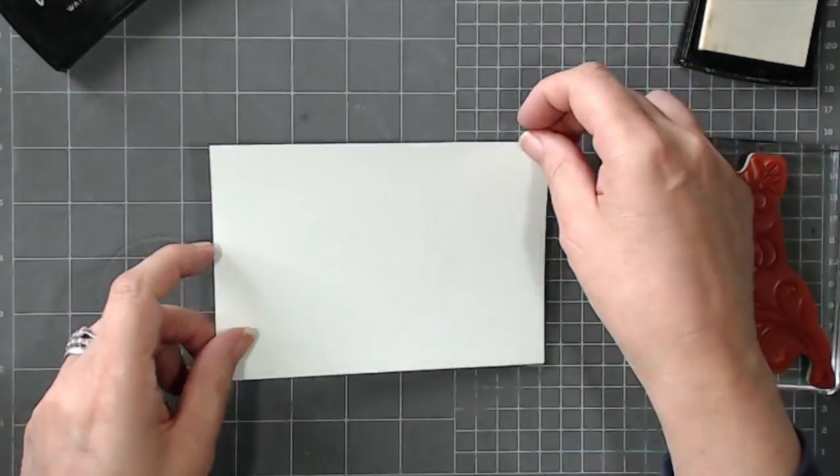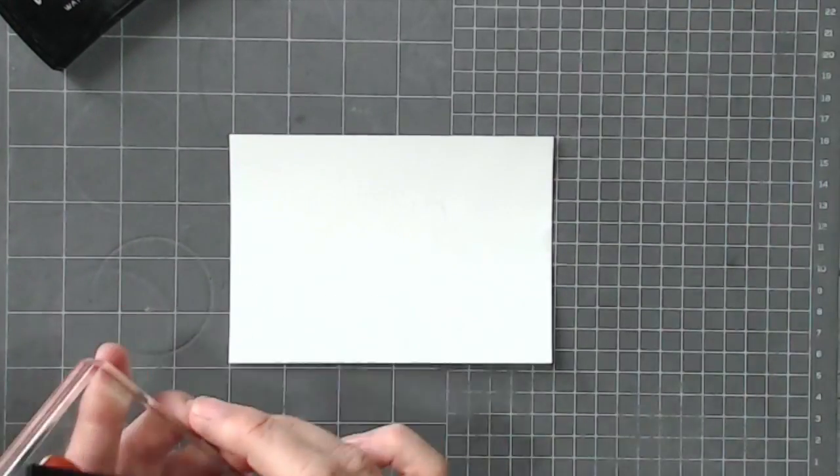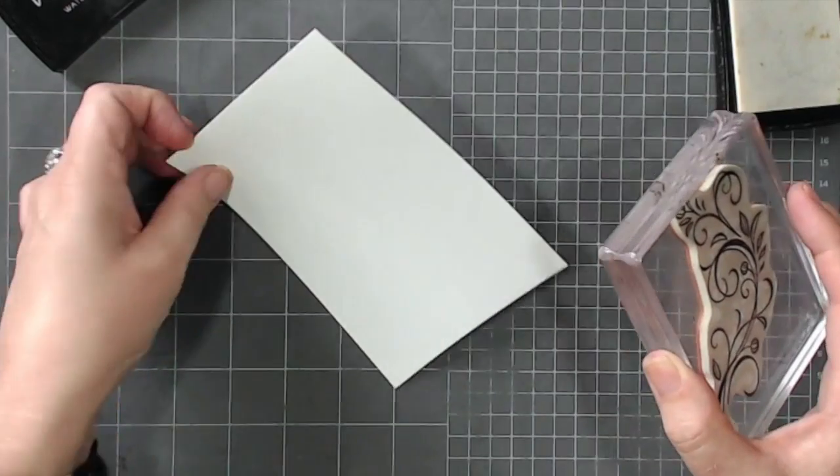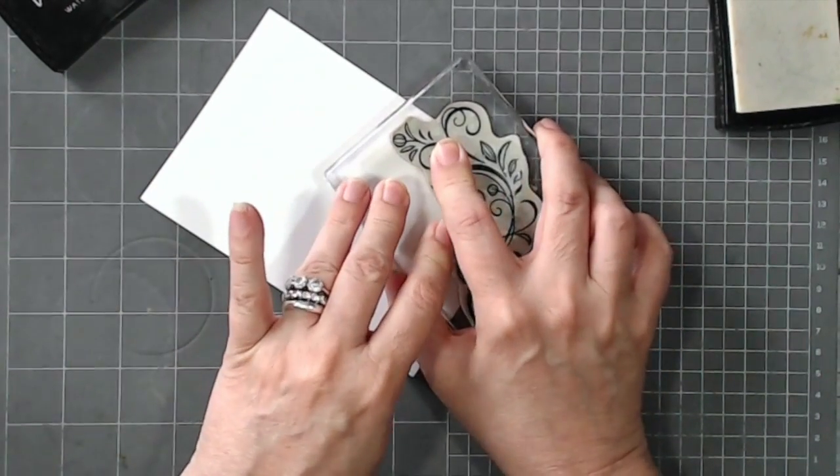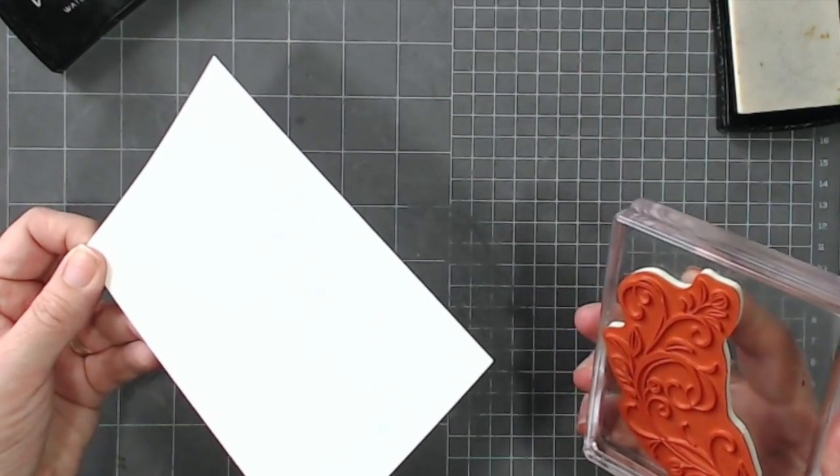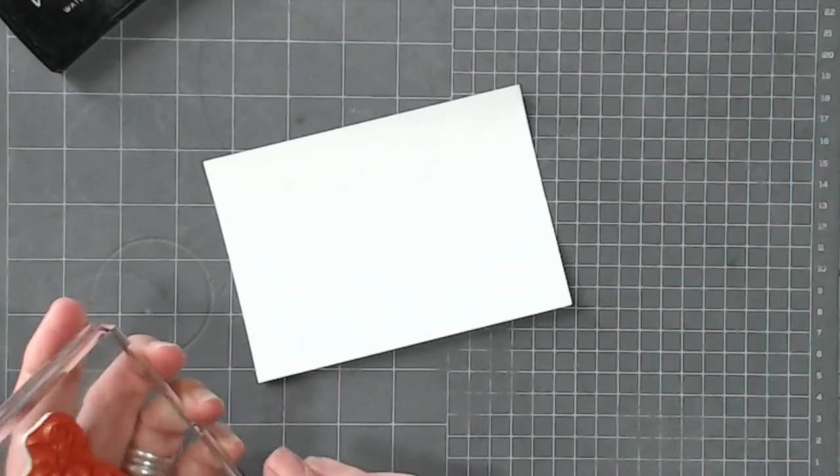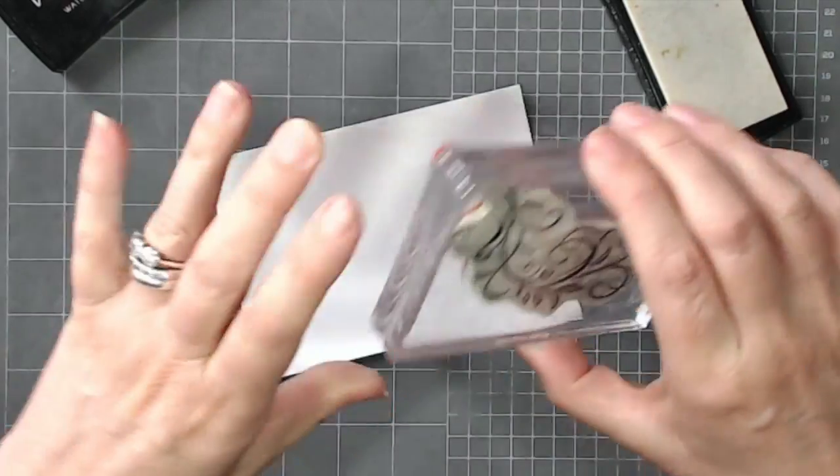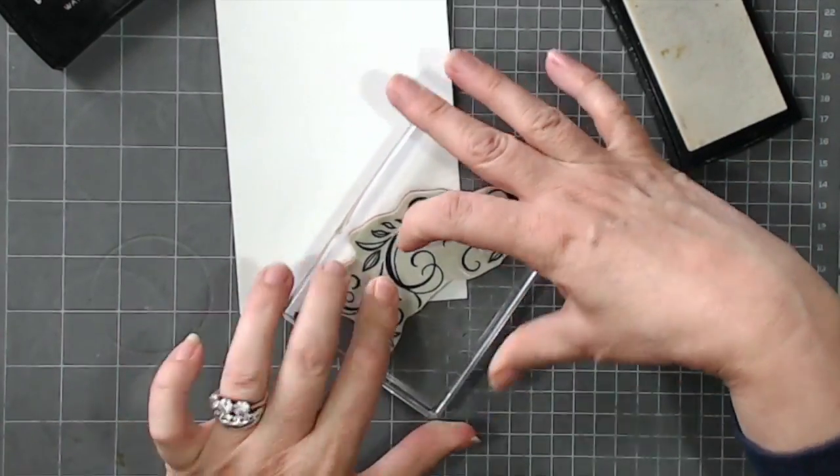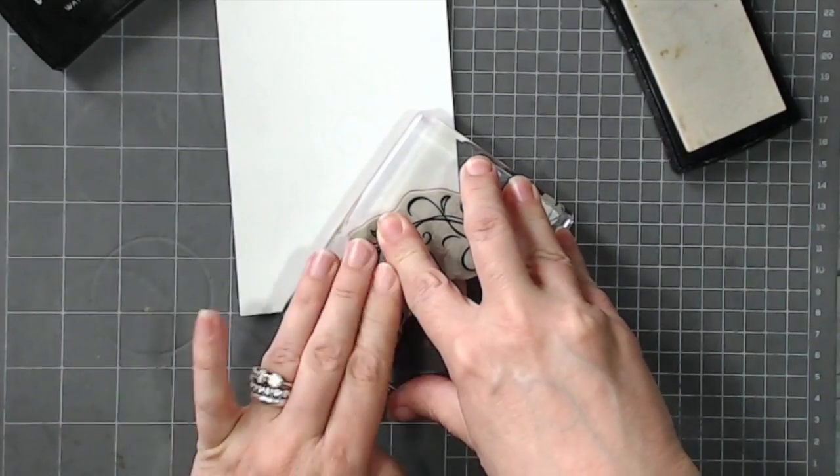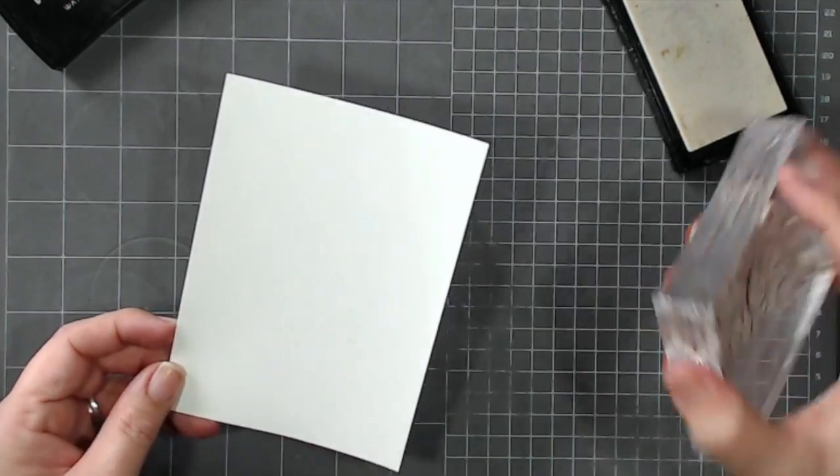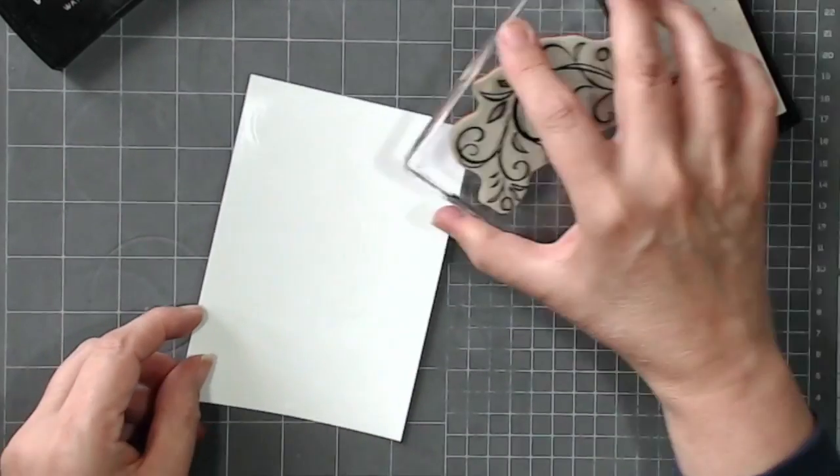I have got a Versamark image on there and I'm just going to stamp it a few more times. I'm just trying to avoid where I've stamped before and it's not easy to see at all. And again in this corner I think, shall I have it that way I think, and just a little bit into this corner.